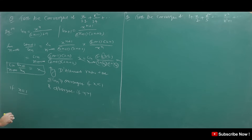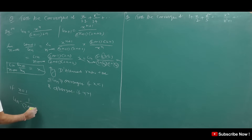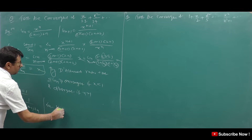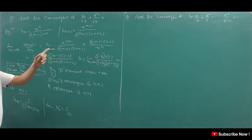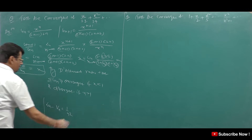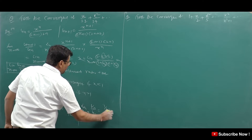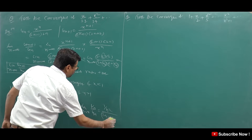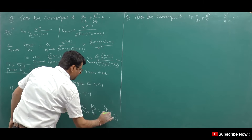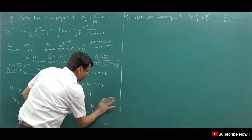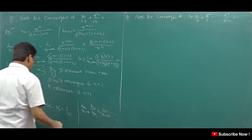Now if x is equal to 1, then u_n equals 1 upon (2n−1)·2n. We will use the comparison test. We will see how much n is squared, so v_n will be 1 upon n². Limit n tends to infinity of v_n upon u_n: v_n value is 1 upon n², and u_n is 1 upon (2n−1)·2n. Taking n common and cancelling, we get 4 — which is finite and positive.